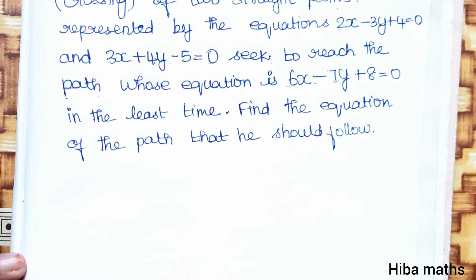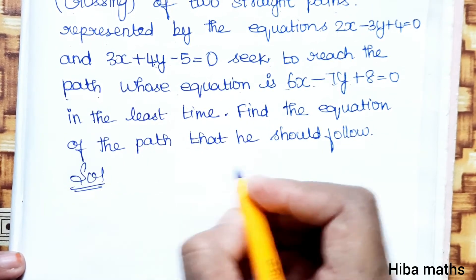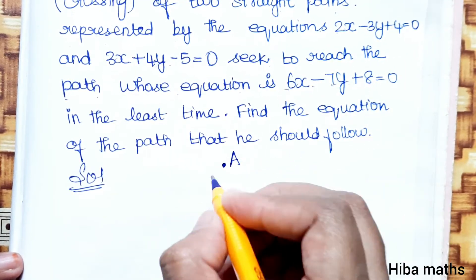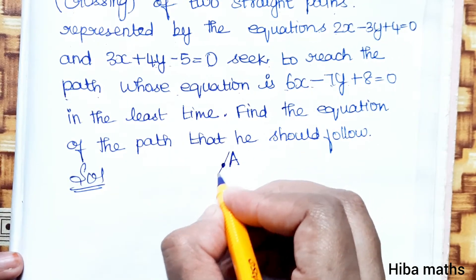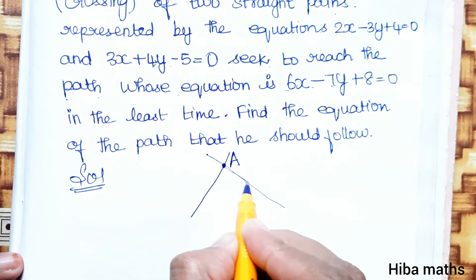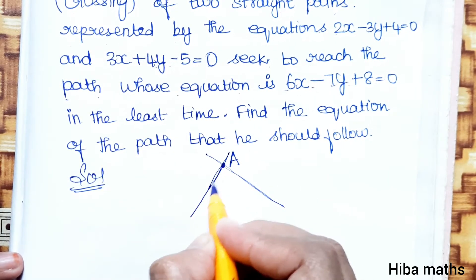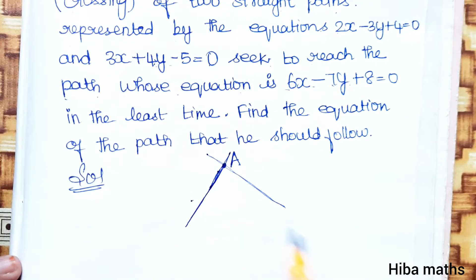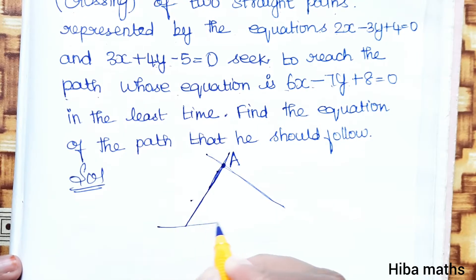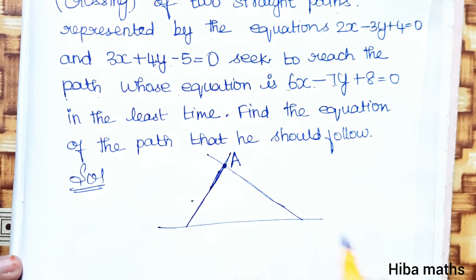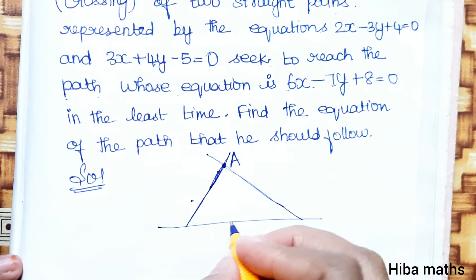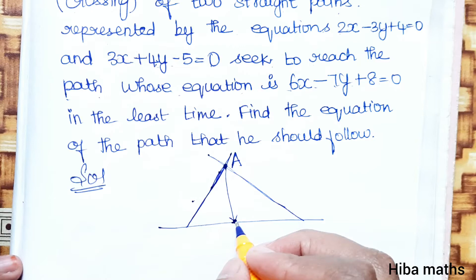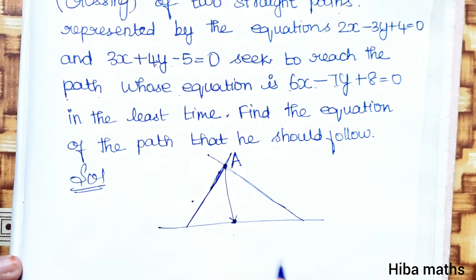Let me understand this question. One person stands at a junction — this is a two-line crossing point. The junction is the intersection of two lines. The point they need to reach is along a line that is perpendicular to the given path.